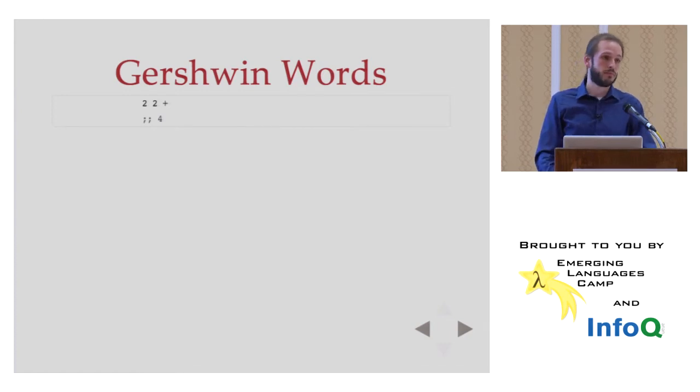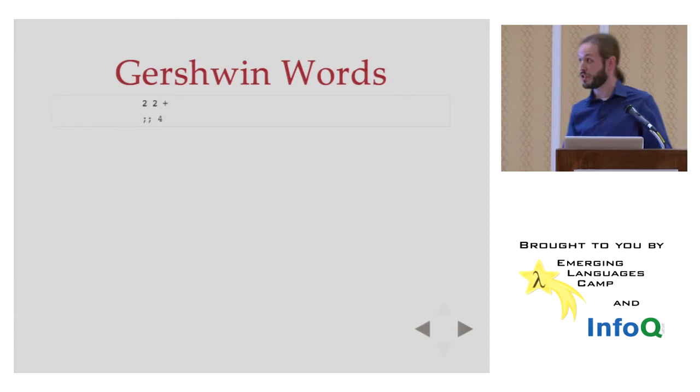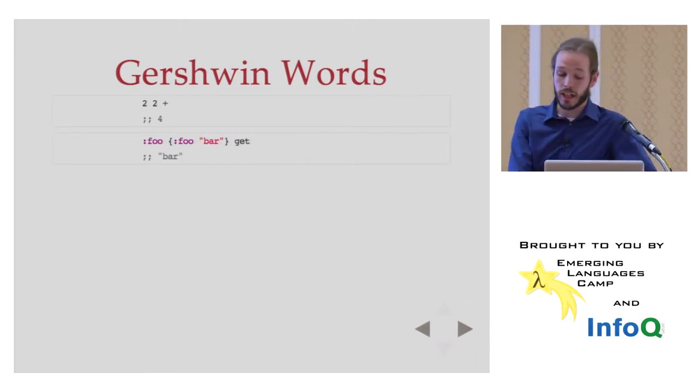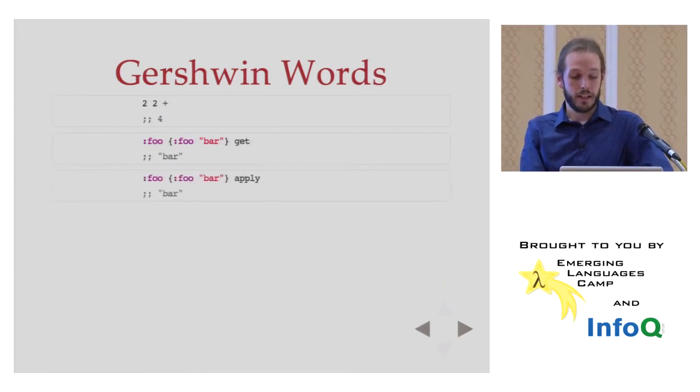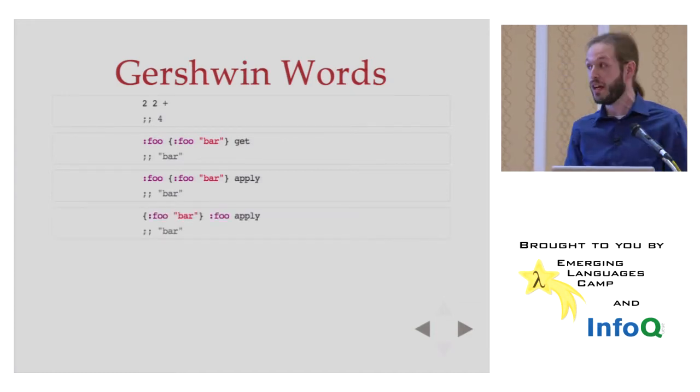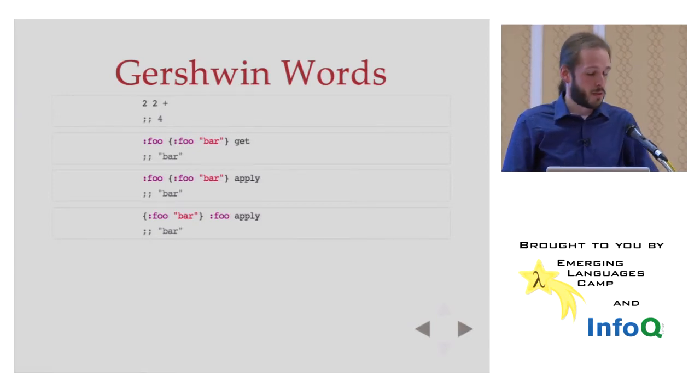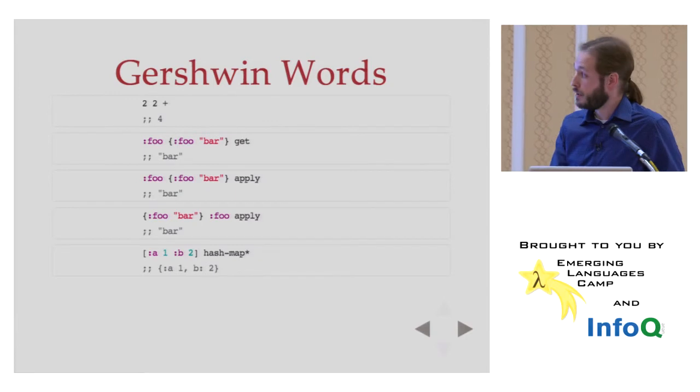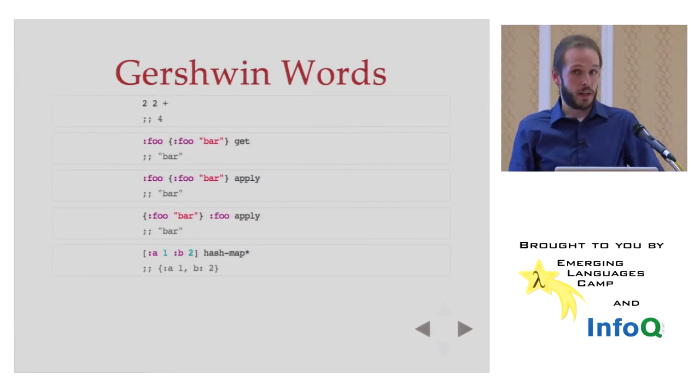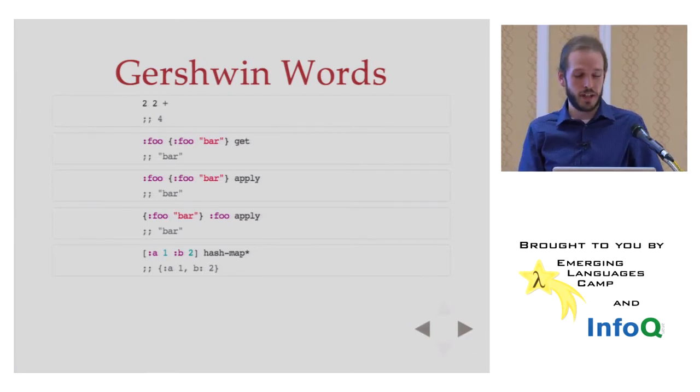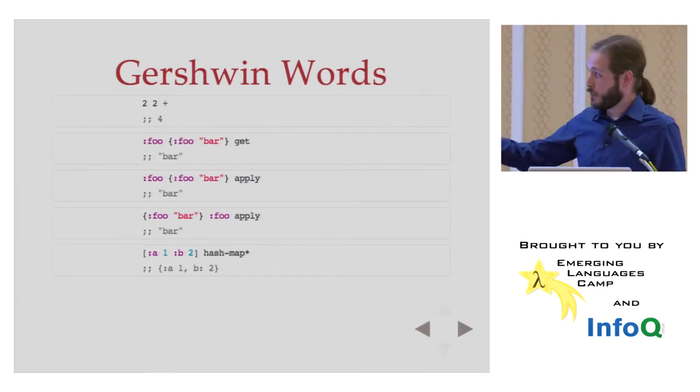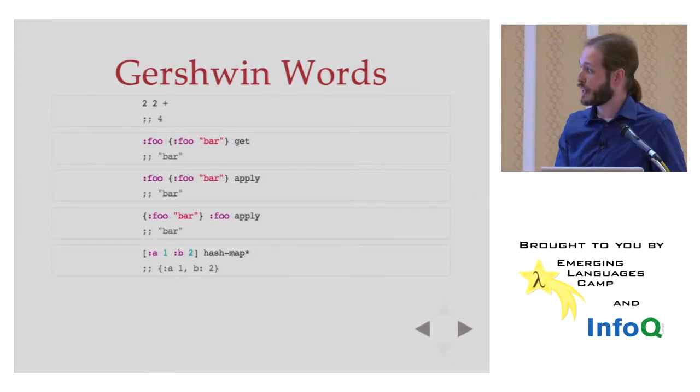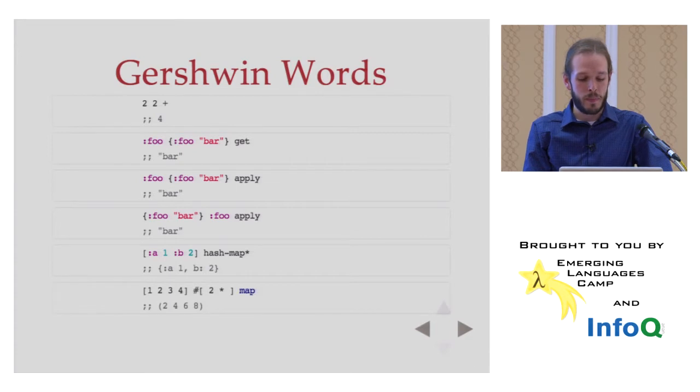Put two on the stack. Put two on the stack. Put the plus word on the stack. And the plus word will look on the stack, grab its arguments and put the return value back on the stack. That's four. The same map getting we saw before. I can take a map and a keyword and get the value out of it. I can use a map like a function. I can use a keyword like a function. And so, in this case, Gershwin has taken the word apply and changed what it means from default Clojure to say, take the thing on the top of the stack, treat it like a word, and give it arguments off the rest of the stack.